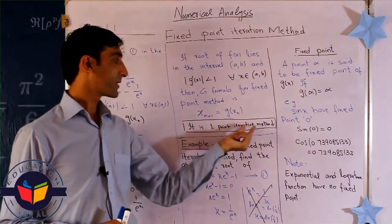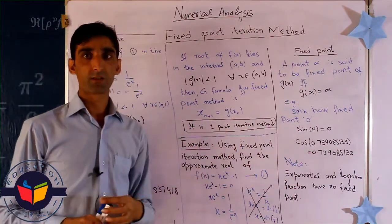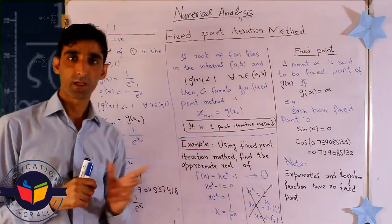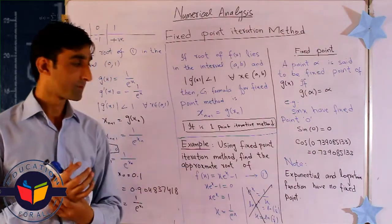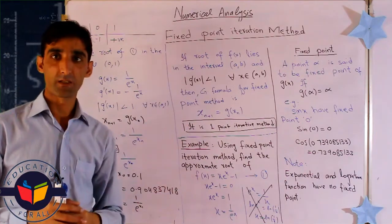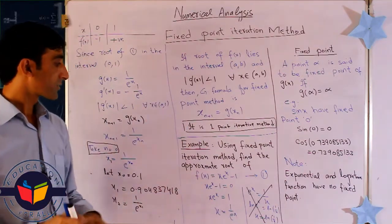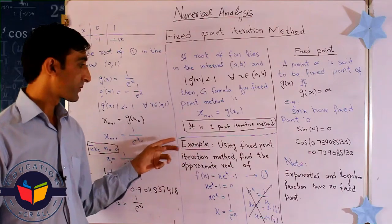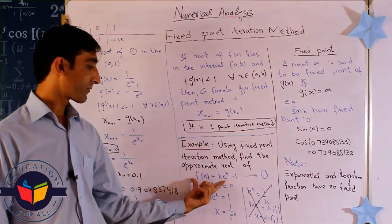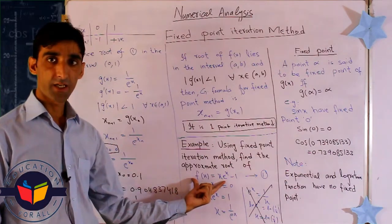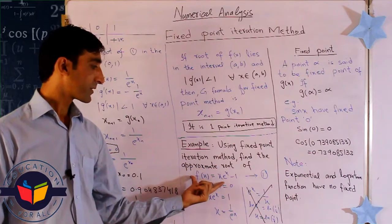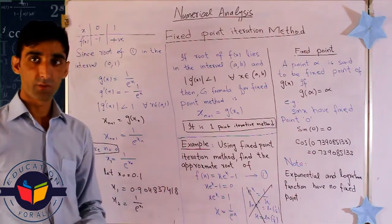This is called the one-point iterative method, because for iteration we need only one point. Now here is the example: given a function, we want to approximate the root of this equation.